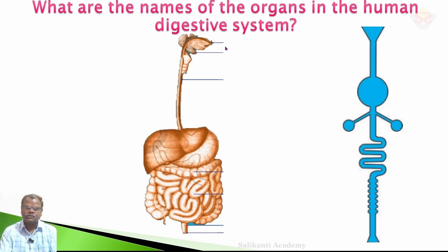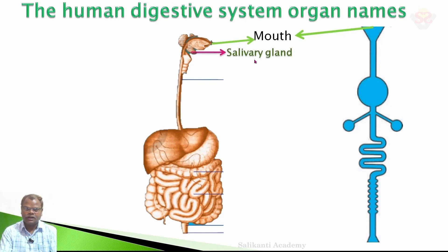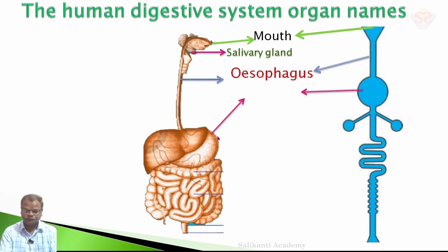The first part of the digestive system is the mouth. Then this is the salivary gland. And this is the esophagus. And this is the stomach.